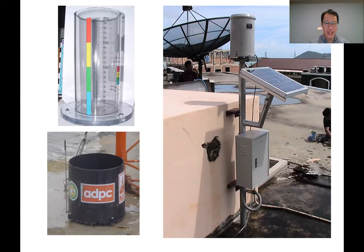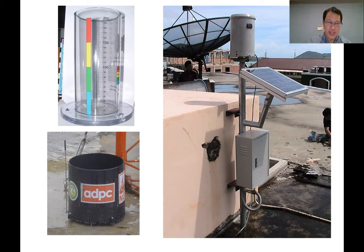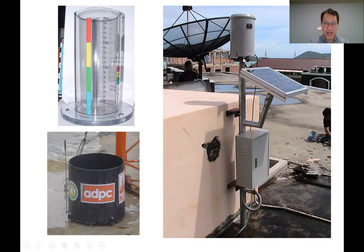These are examples of rain gauges — various types of rain gauges. There is the cup type, which is shaped like a cup, and it measures the accumulated rainfall or precipitation over 24 hours in this case. Several types can be automatic.